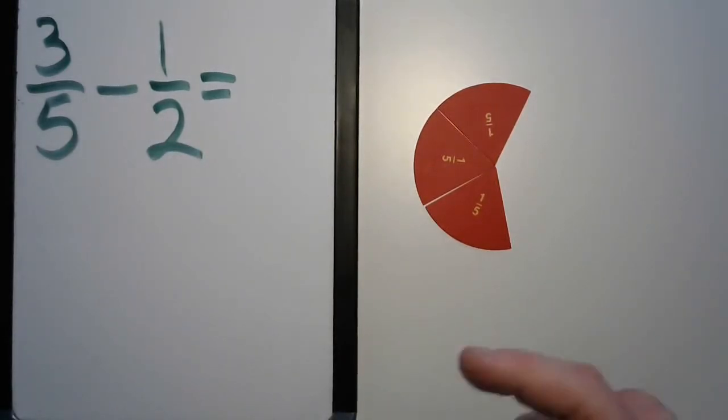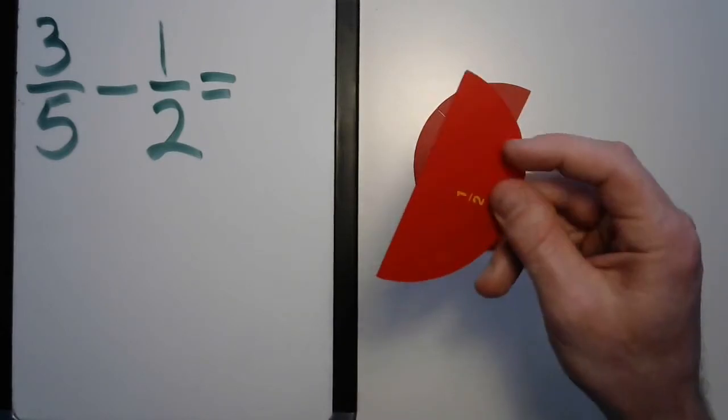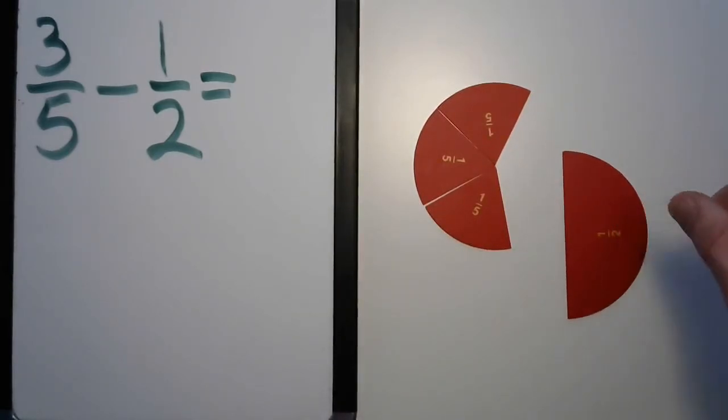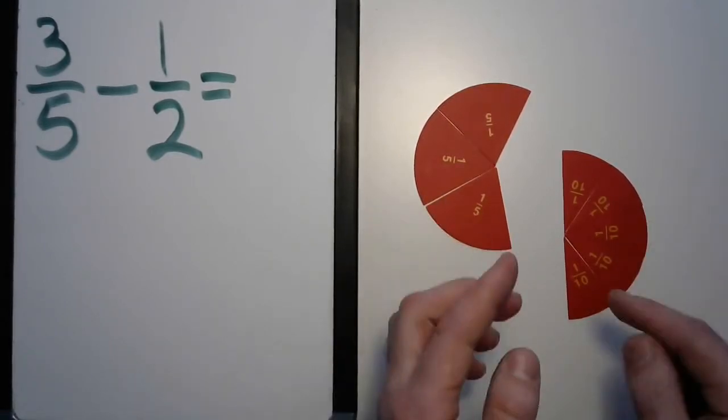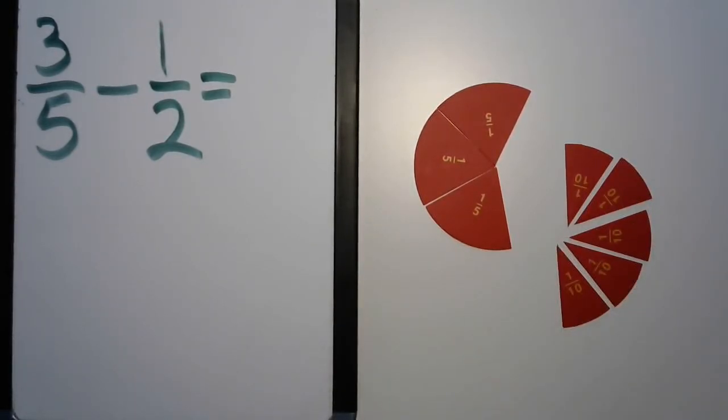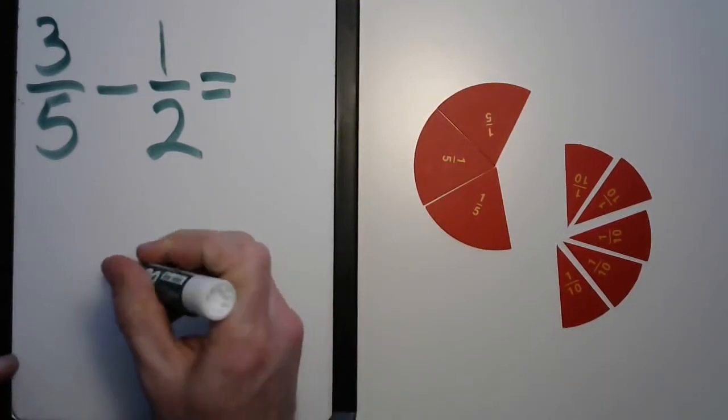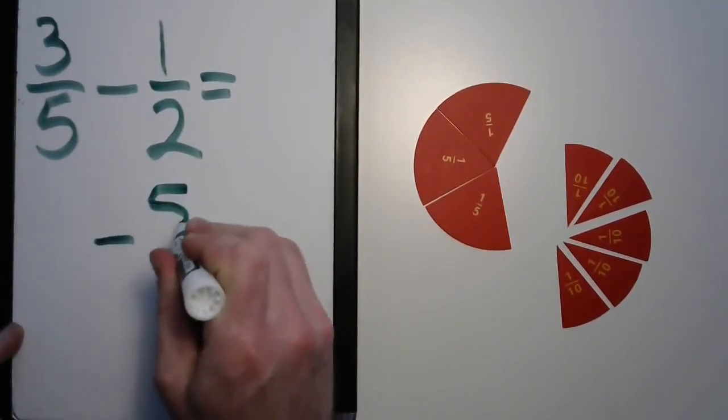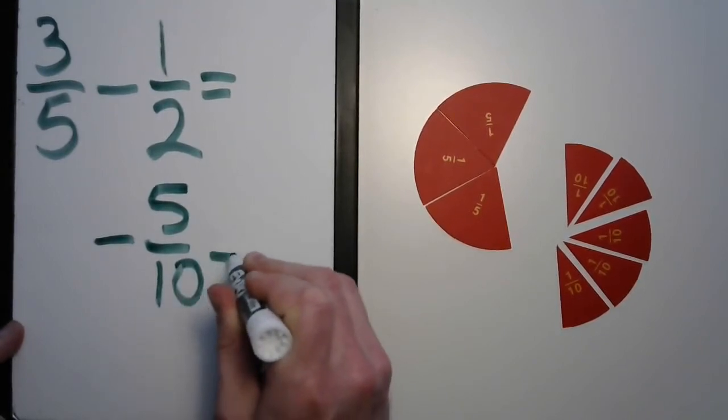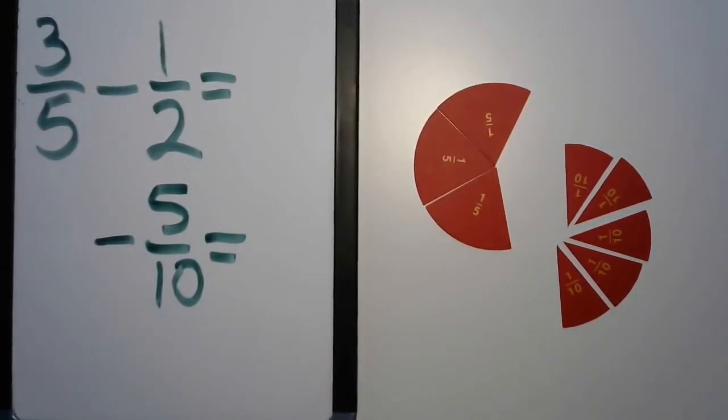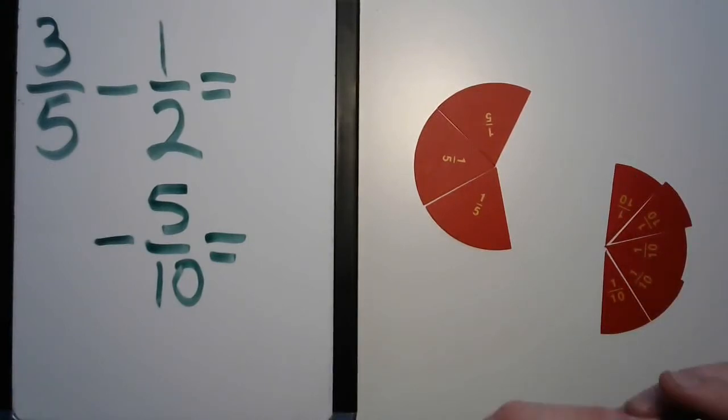So we need to take away one of these. But how many tenths would that be? One, two, three, four, five tenths. Okay. Well, let's do this as we go. There's the five tenths. How many tenths would our three-fifths turn into? Let's find out.